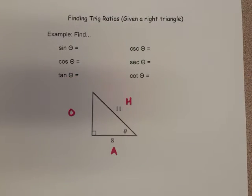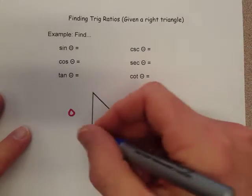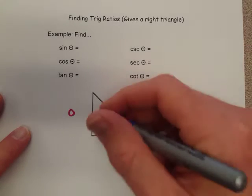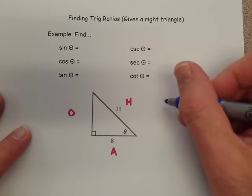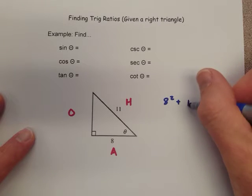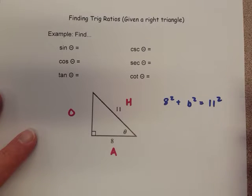All right, now let's find out what that opposite is going to be. We need to use the Pythagorean theorem since this is a right triangle, so we can go, if we call that one just B, we'll call that side B, we'll say 8 squared plus B squared equals 11 squared.